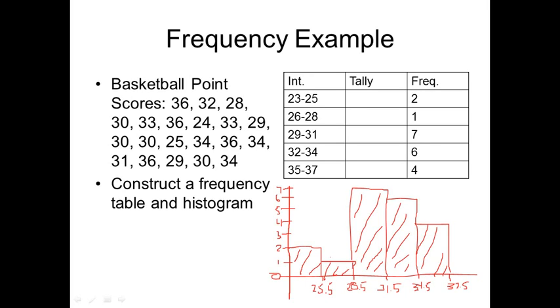The thing to keep in mind is that this is not really a normal distribution because the second class, 26 to 28, goes down from the first class, 23 to 25.